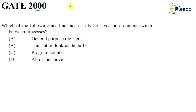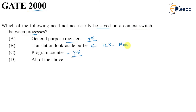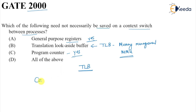Let's look at a question from GATE 2000 on this topic: 'Which one of the following is not necessarily saved on a context switch between processes?' The options include general purpose registers (yes, saved), program counter (yes, saved), and the Translation Lookaside Buffer (TLB). The TLB is part of memory management used for address translation by the MMU. TLB entries are not necessarily saved on a context switch — so TLB is the correct answer.